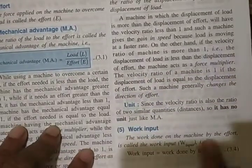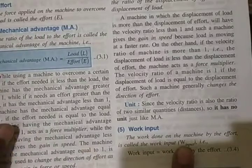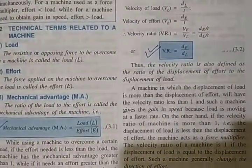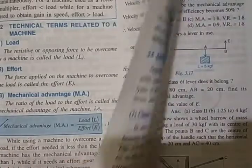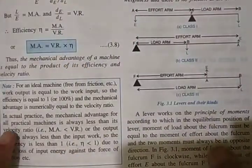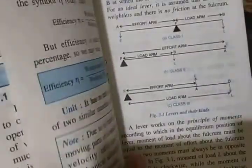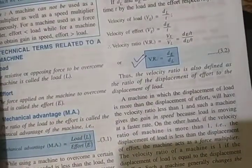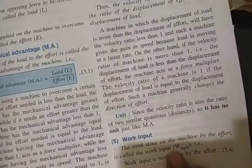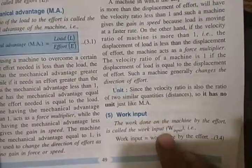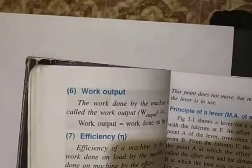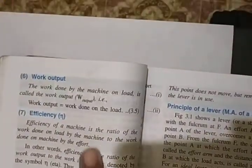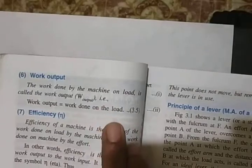Work input is work done on the machine by the effort. Always remember effort is input and load is the output. How much effort we are putting is the input, and load is the output. So work done by the effort is called work input, and work done by the load is called work output.